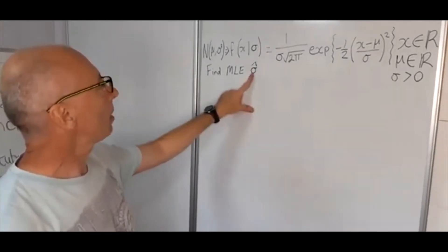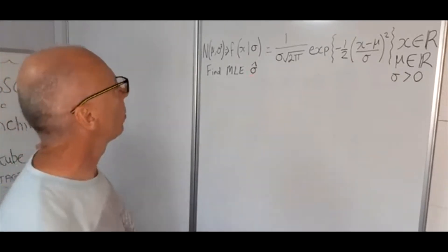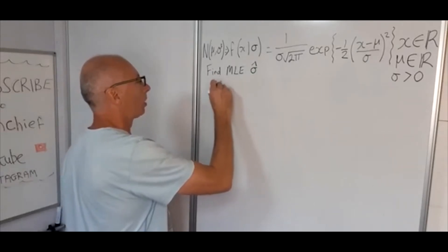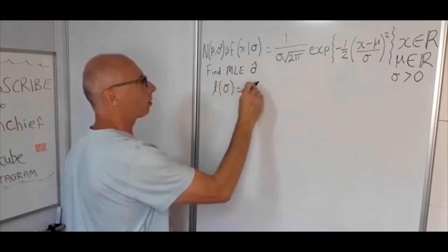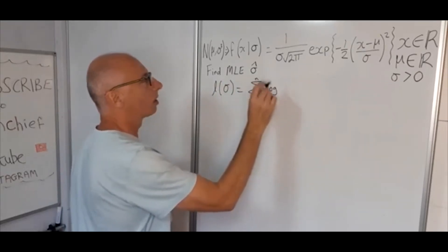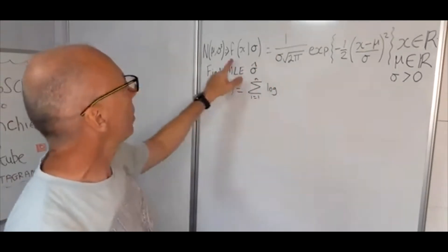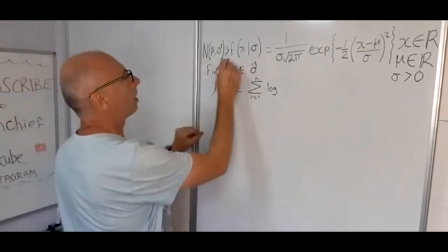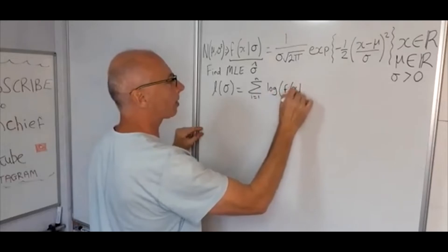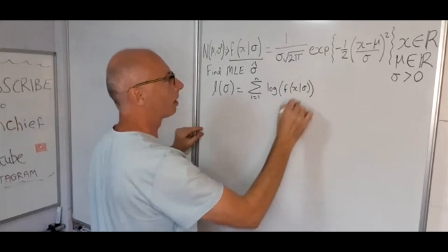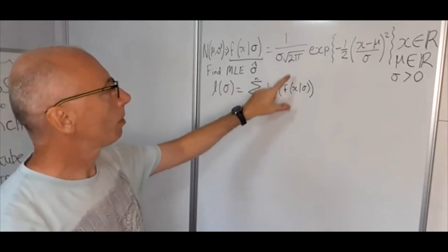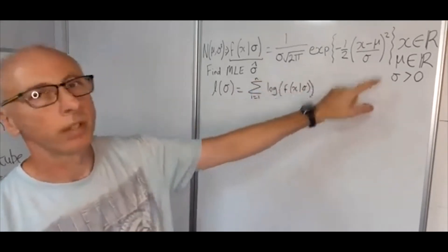We need to find this parameter sigma. First of all, we need to find the log likelihood. The log likelihood with respect to sigma equals the sum from i equals 1 to n of the log of this function. So we need to take the log of f of x given sigma.